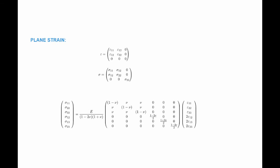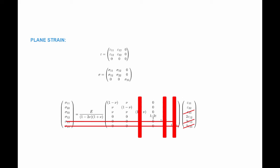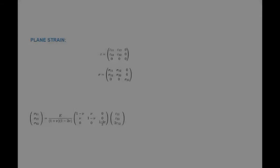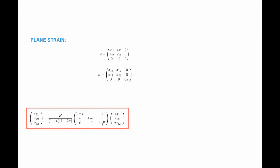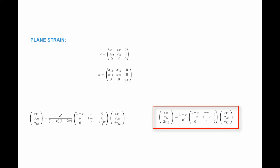Starting from the general relationship between stress and strain for linear elastic isotropic materials, I can simplify by identifying which values are zero. Since epsilon_33, epsilon_13, and epsilon_23 are zeros, I can eliminate the corresponding columns. The rows for sigma_13 and sigma_23 are also zero, so I can eliminate those as well. I'm left with a simple relationship between sigma_11, sigma_22, sigma_12, and epsilon_11, epsilon_22, and 2*epsilon_12 for the plane strain condition. The inverse of this relationship is shown here as well.